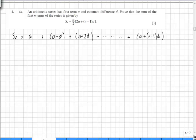Now if we were to reverse this sum and start with the last term through to the first term, we'd have a plus (n - 1)d plus a plus (n - 2)d plus a plus (n - 3)d and all the way back to just a.